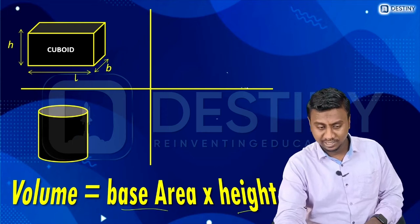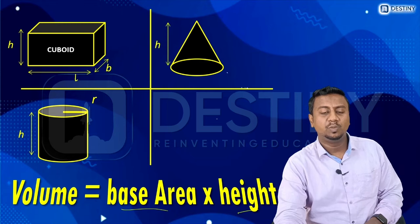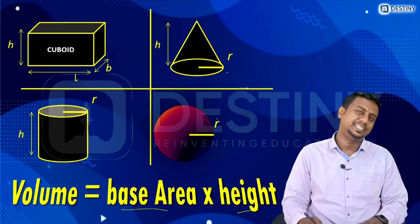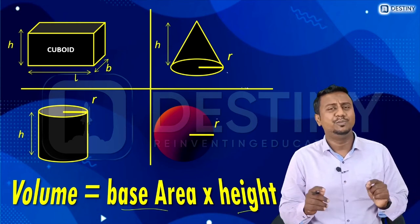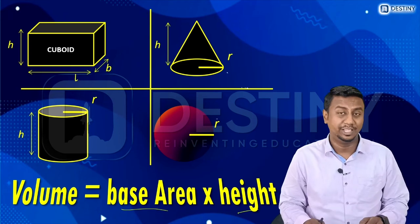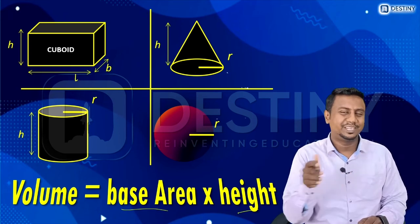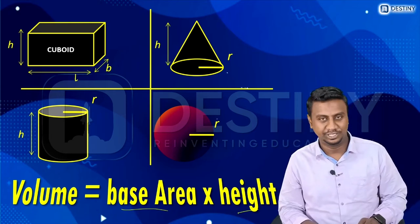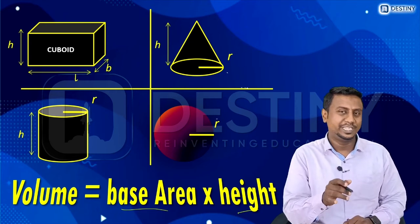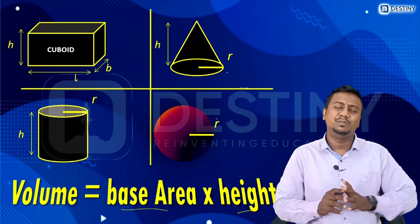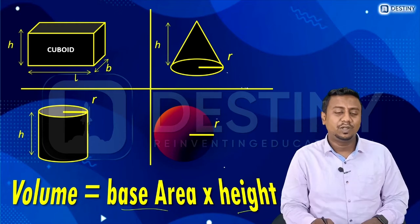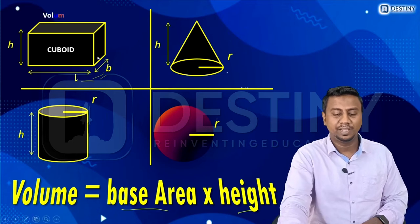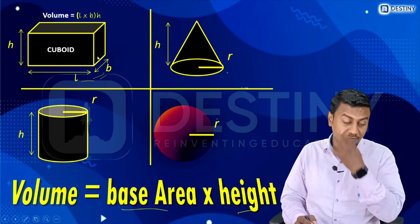A cylinder with radius r and height h, a cube with side r, and a sphere with radius r — these are the four basic shapes. Apart from these, any shape in the world is a combination of these four shapes or can be broken into them. For a cuboid, the base area is l times b, multiplied by height h, giving volume as l times b times h.